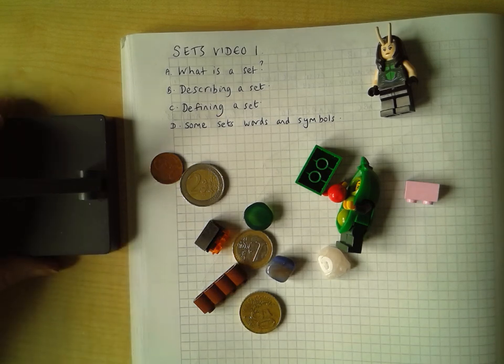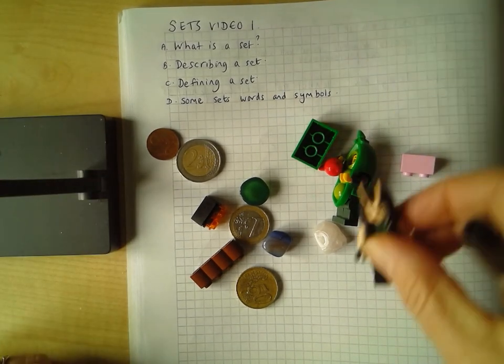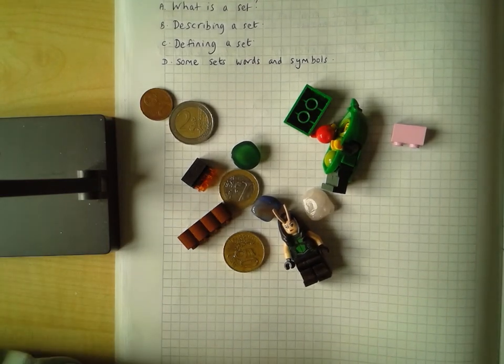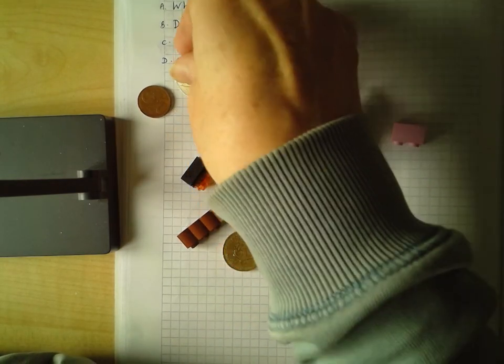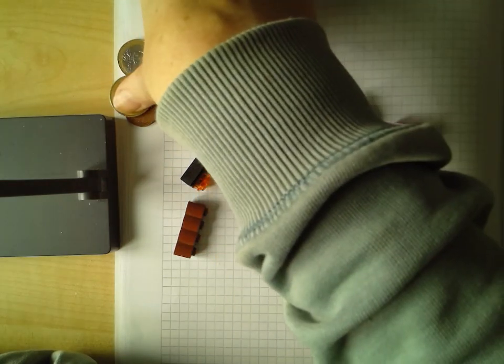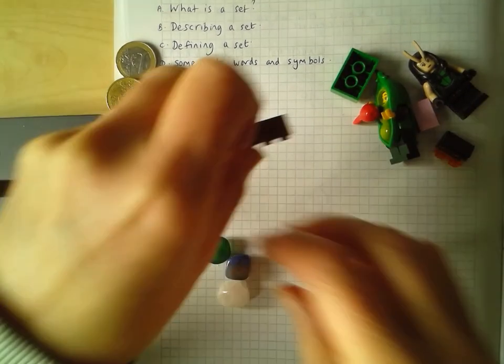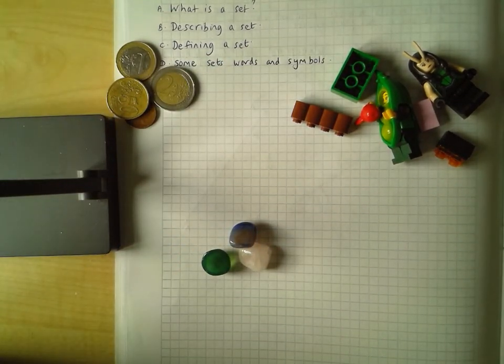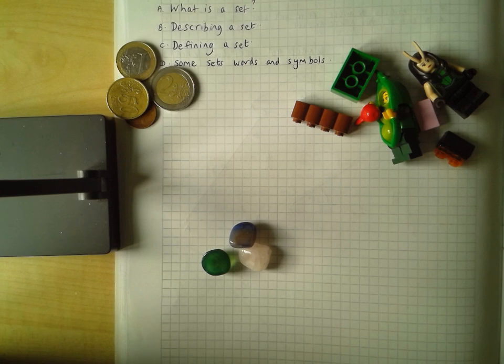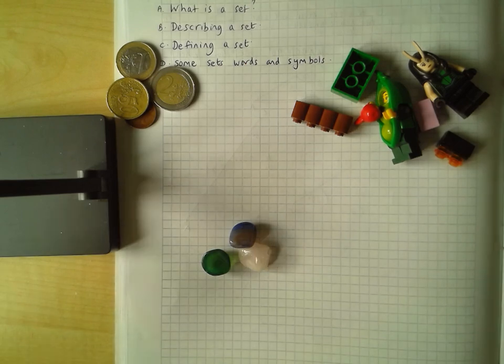So looking at these items here, if I asked you to sort these out, you might sort them in this way. You might say, well, I'm going to put all the coins together. I'm going to put all the Lego pieces and figures together. And I'm going to put all the little stones together. In doing that, what you've done is you've sorted the items that I had on my page into groups of items that have something in common. They're similar to each other. And a set is basically a collection of items that are similar to each other. Sometimes they're numbers. Sometimes they're objects. But they all have something similar in common. That's what a set is.